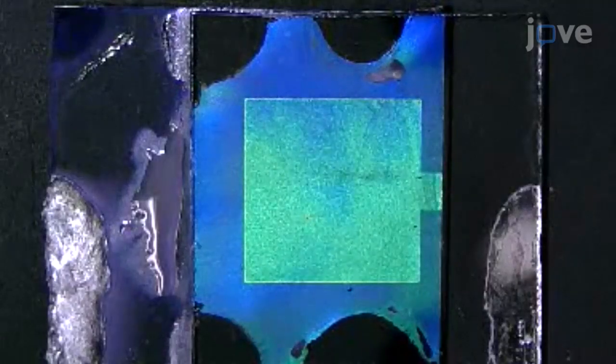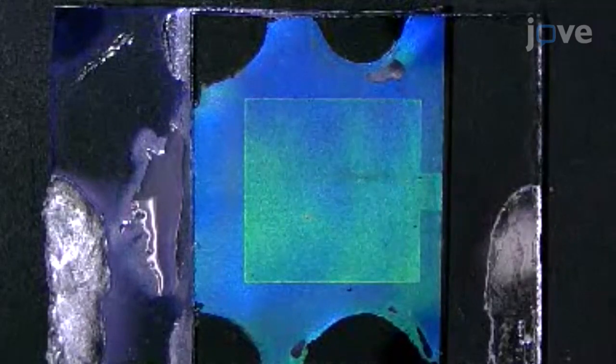Our method enables the fastest color modulation with the lowest operation voltage ever reported for cholesteric liquid crystals. The key is FCD, a chiral dopant with redox-responsive helical twisting power.